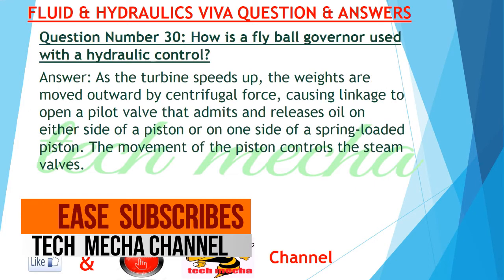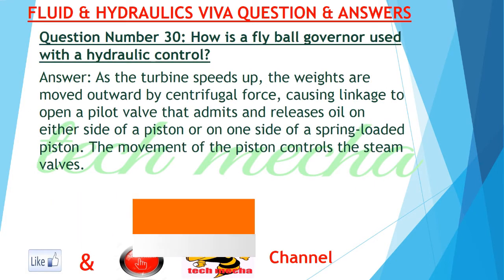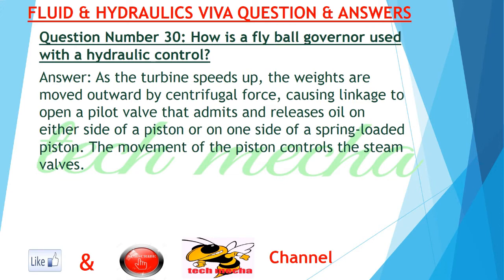Question number 30: How is the fly ball governor used with hydraulic control? Answer: As the turbine speeds up, the weights are moved outward by centrifugal force, causing linkage to open a pilot valve that admits and releases oil on either side of a piston or on one side of a spring-loaded piston. The movement of the piston controls the steam valves.